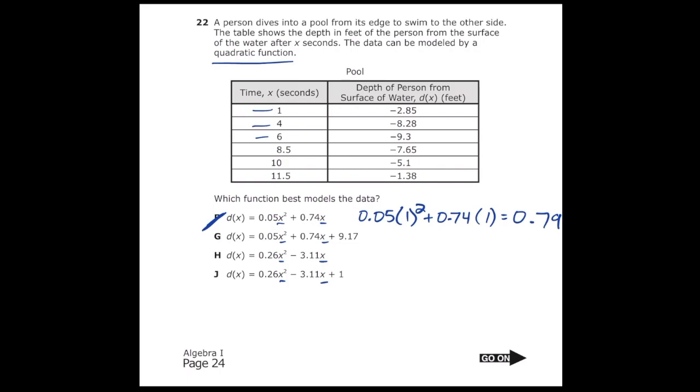So once I do that for every single answer choice, I should end up getting that the correct answer is letter H because whenever I plug in 1, that equals negative 2.85.